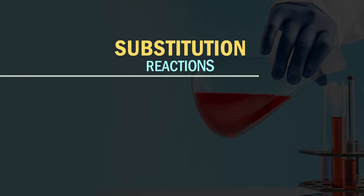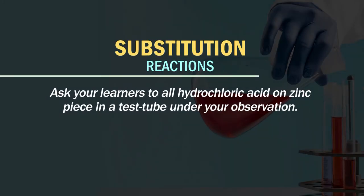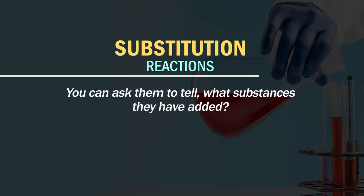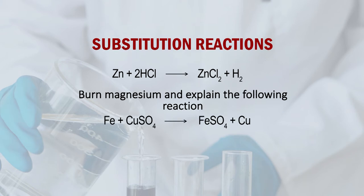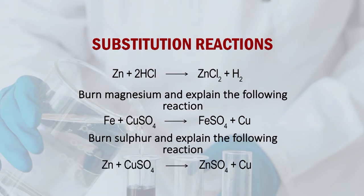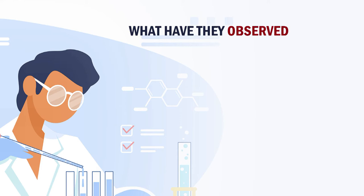Then comes the substitution reaction. The pattern can be the same — instead of telling the definition, give them chemicals like hydrochloric acid. Let them add HCl in a test tube to some zinc pieces and observe what happens. Ask what substances they added, what is the formation, can they write its chemical equation. They will write: Zn + 2HCl = ZnCl₂ + H₂. Then ask them to mix iron filings with copper sulphate and observe: Fe + CuSO₄ = FeSO₄ + Cu. They can also do the same with zinc and copper sulphate solution. When you ask what is happening, they will observe that in equation 1 zinc has replaced hydrogen.